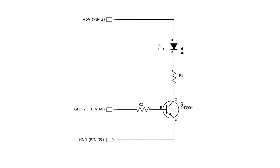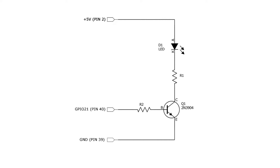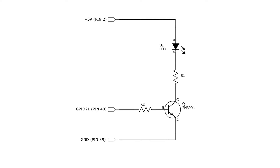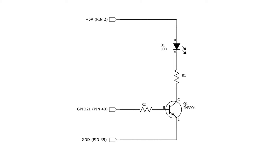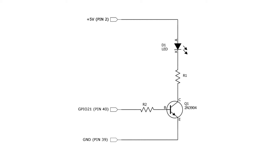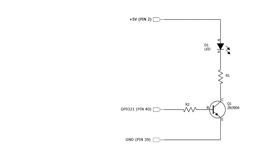We're still driving the circuit using GPIO21 on pin 40, except rather than driving the LED directly, it will drive the base of the transistor — basically the base of our switch. Ground on pin 39 connects to the emitter of the transistor. We need to calculate R2 to give enough current to turn the transistor on without exceeding the GPIO pin's limit, and also calculate R1 as the current limiting resistor to limit current through diode D1 to 20 milliamps. Since this is a 3.4-volt LED, we'll use a +5-volt supply from pin 2 of the 40-pin header.